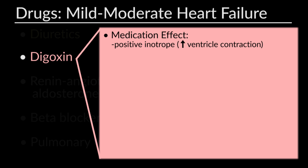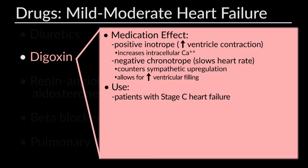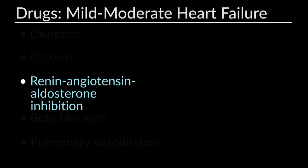Digoxin has a positive inotropic effect mediated by the sodium-potassium ATPase pump, increasing intracellular calcium, which is imperative to increase ventricular contraction. Additionally, it has a negative chronotropic effect that slows atrial conduction and vagotonic properties that counter maladaptive sympathetic upregulation, decreasing heart rate and allowing more time for the ventricle to fill. It's generally used in infants and children with stage C heart failure. Benefits can be seen at lower doses, with trough levels of only 0.5 to 1 nanogram per mL.